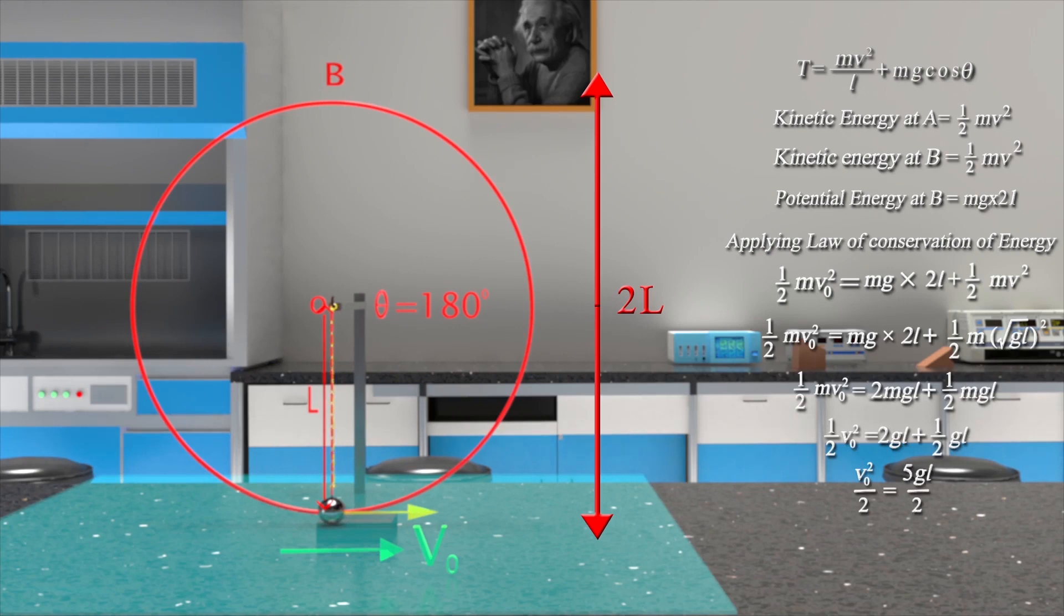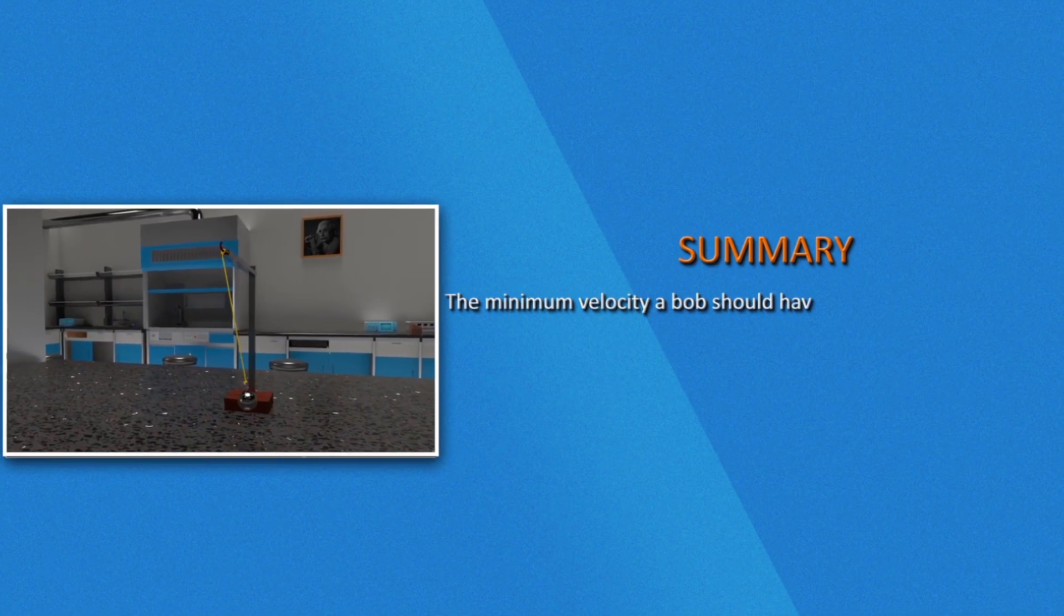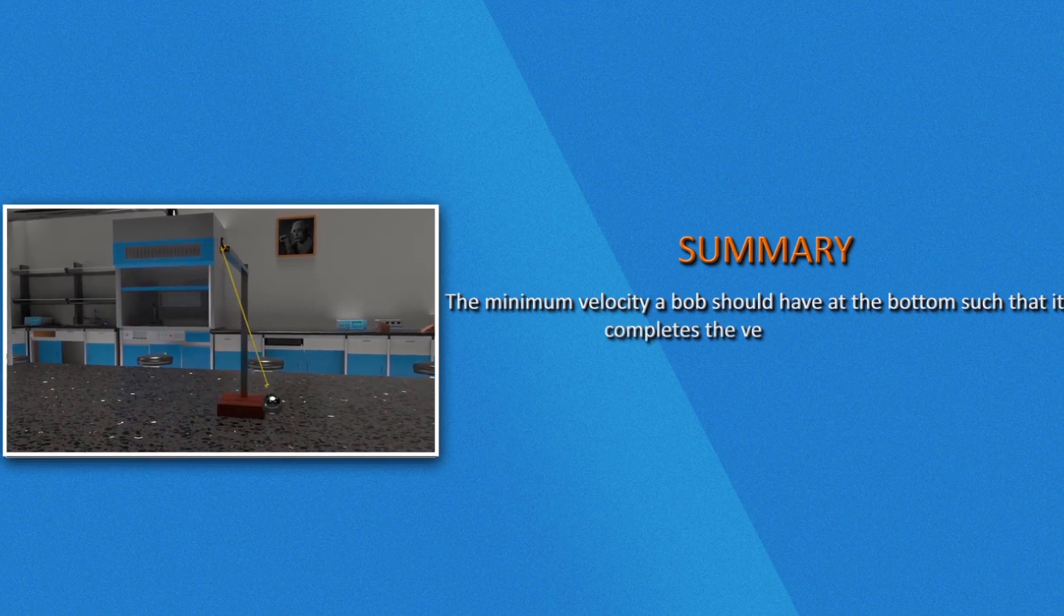Upon cancelling M on both sides and solving, we get v not equal to root over 5gl. Hence, minimum velocity the bob should be given at the lowest point A so that it completes a full circle is root over 5gl. Summary: The minimum velocity a bob should have at the lowest point such that it completes the vertical circle is root over 5gl.